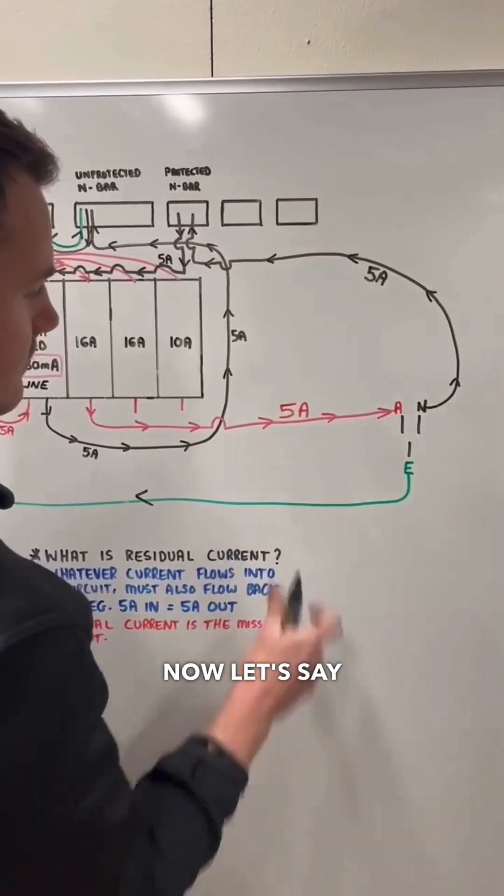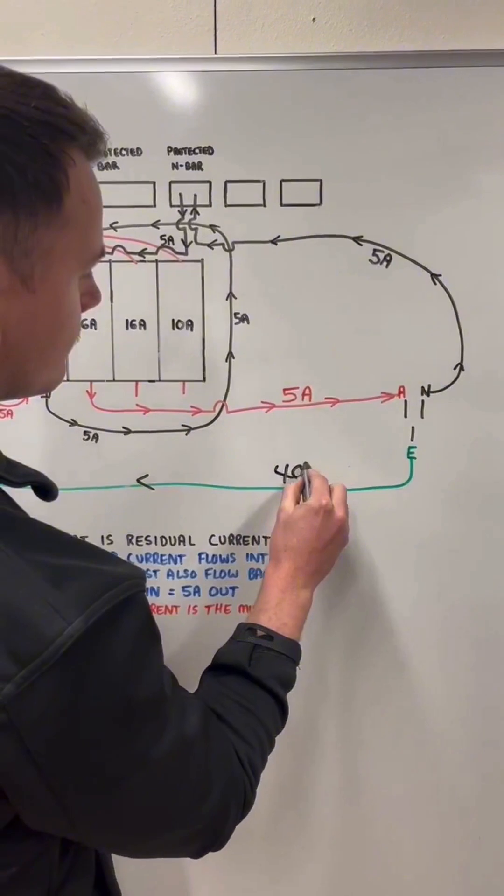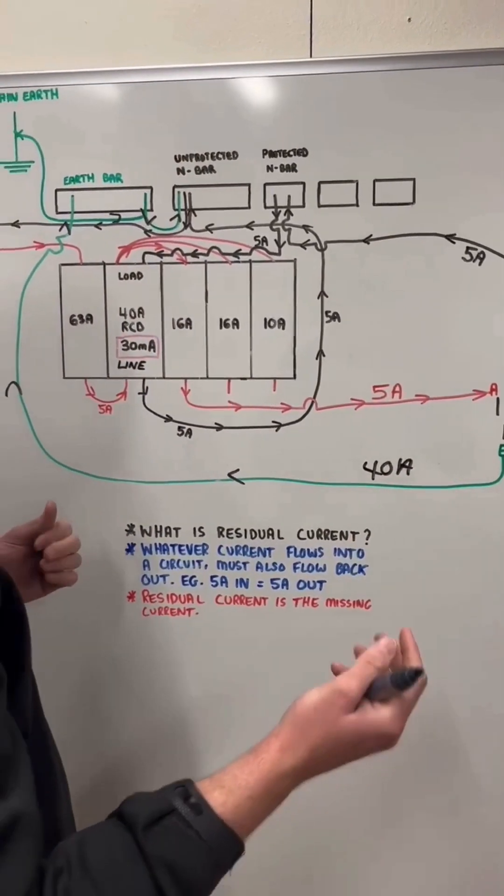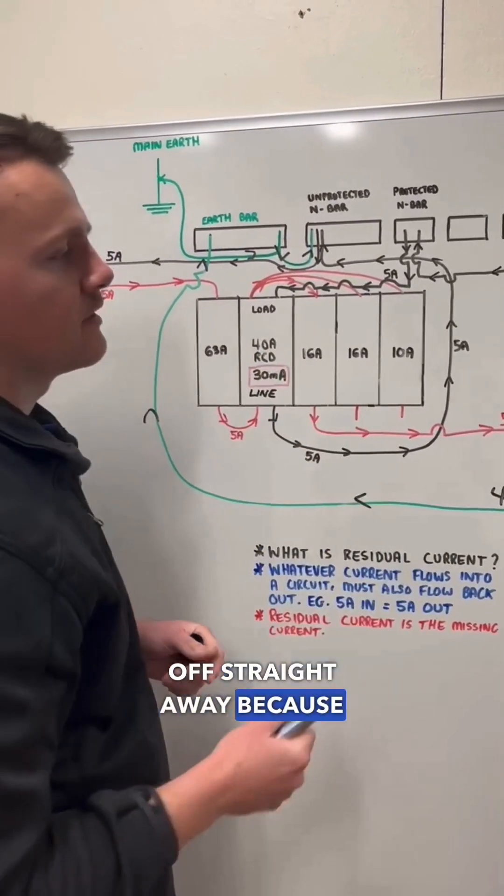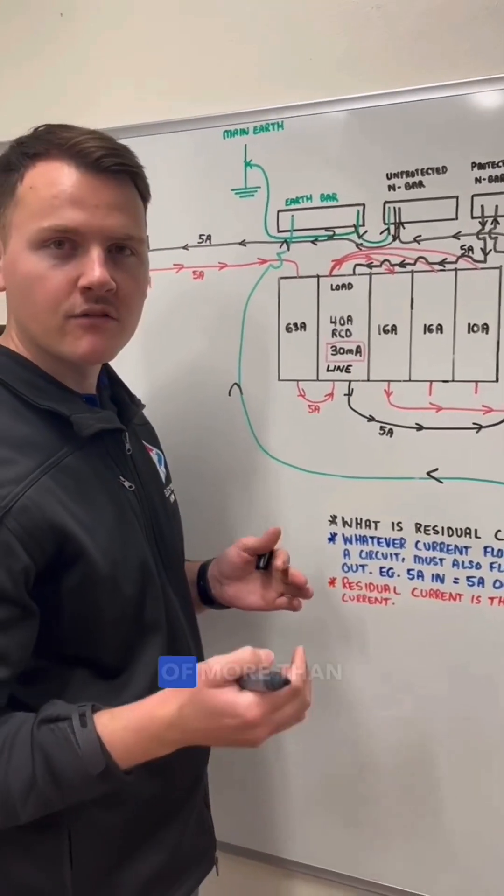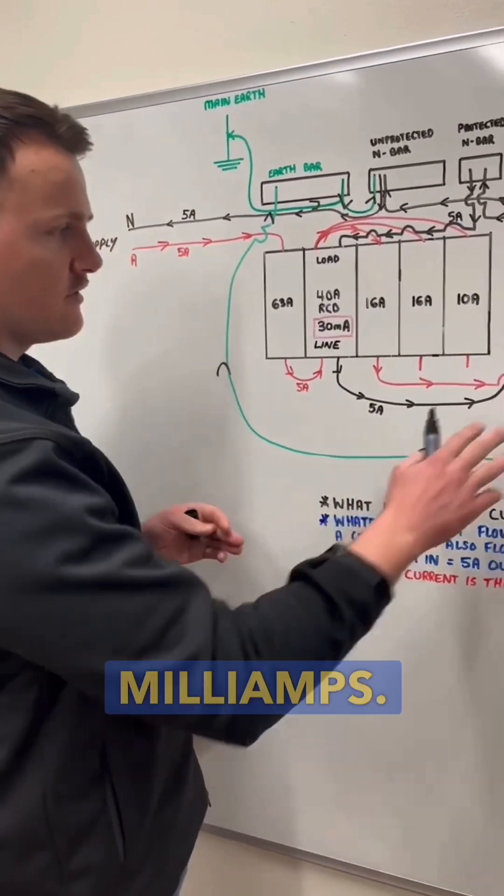Now let's say we have 40 milliamps returning through earth. So we've got a bit of earth leakage. This will trip off straight away because it's detected an imbalancing current of more than 30 milliamps. So this is residual current.